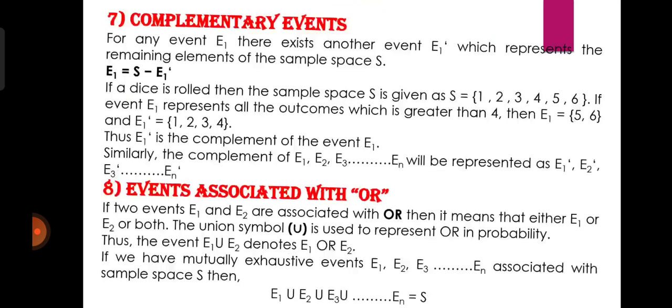Events associated with OR: अगर दो events E1 और E2 हैं और दोनों OR से associated हैं, इसका मतलब होगा either E1 or E2 or both। इसके लिए हम union (∪) symbol का use करते हैं, जो OR को represent करने के लिए होता है। यानि जो E1 ∪ E2 है वो E1 or E2 को define करेगा। अगर दो events ऐसी हैं जो mutually exhaustive events हैं और वो sample space S से जोड़ी हुई हैं, तो E1 ∪ E2 ∪ E3 ∪ ... ∪ En = total sample space।